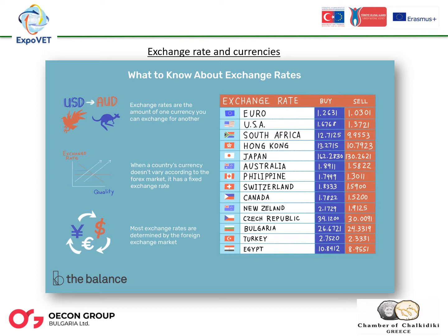Where are those markets? In reality, there is no central location for the foreign exchange market. It is a distributed electronic market with nodes in financial companies, central banks and brokerage houses. Forex trading runs 24 hours a day, seven days a week, and can be segmented into regional market hours based on peak trading hours in New York, London, Sydney and Tokyo.